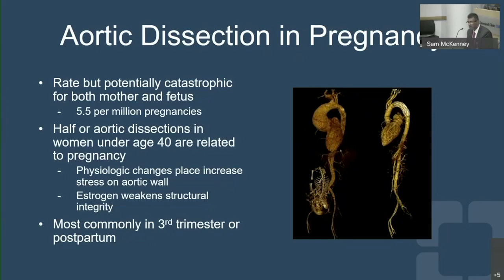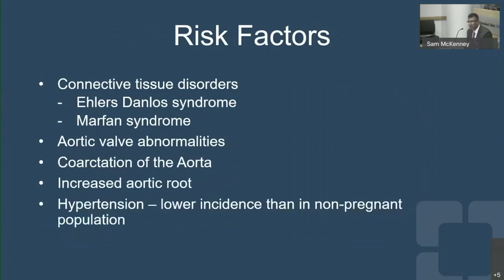Aortic dissection is most commonly seen in the third trimester or postpartum period. The single greatest risk factor is connective tissue disorders, specifically Marfan syndrome. Bicuspid aortic valves can also be associated with aneurysmal development in the aorta, and coarctation of the aorta is also associated, often alongside a bicuspid aortic valve. Some patients simply have increased aortic root diameter for unknown reasons.